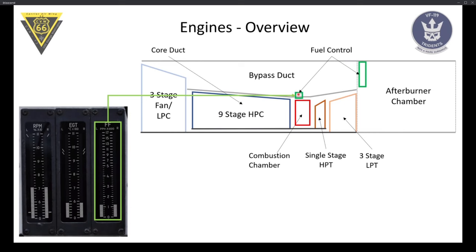The last instrument is fuel flow, which monitors fuel flow to the combustion chamber — not to the afterburner spray bar. This is core engine fuel flow only. It's useful for flight performance calculations and correlates strongly with thrust. For example, on a Case 1 departure flying 300 knots, about 4,000 pounds per minute per engine is appropriate. In the stack, about 2,500 pounds per minute gives best economy. Personally I find fuel flow more useful than RPM for setting power.